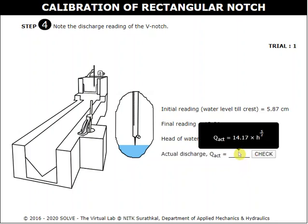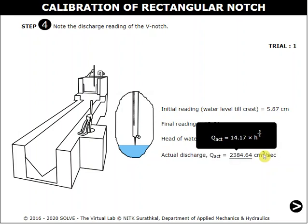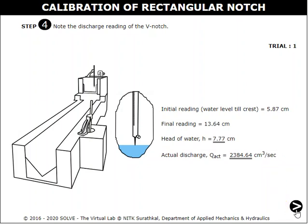Follow the same procedure as in the previous canvas and enter the value of head. By using the displayed formula, calculate the actual discharge of the V-notch. Then click on the check button or result to get the result directly.